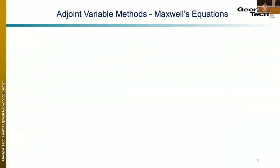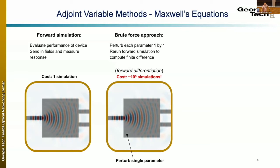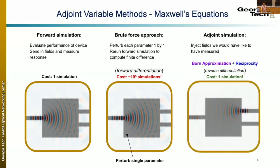Looking at the pipeline efficiency step by step: first we do a forward simulation to evaluate device efficiency. In a brute-force approach we could manually perturb each individual pixel and run a simulation each time — a finite difference approximation. If I have a million degrees of freedom, that means a million simulations just to compute the gradient. The advantage of the adjoint simulation is that it leverages the Born approximation and reciprocity to use a single simulation to achieve the gradient with respect to all those degrees of freedom simultaneously.